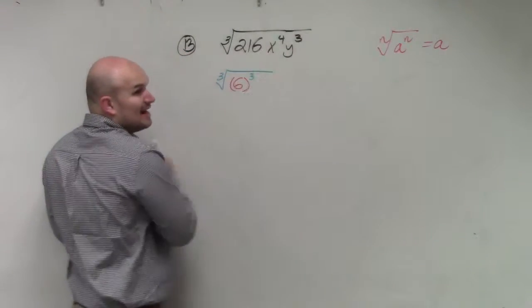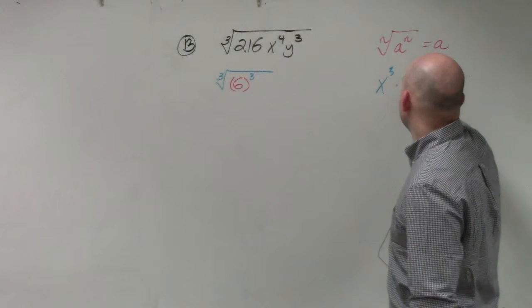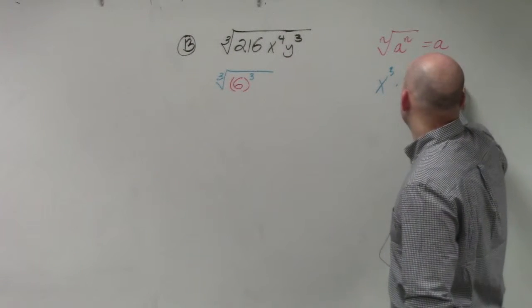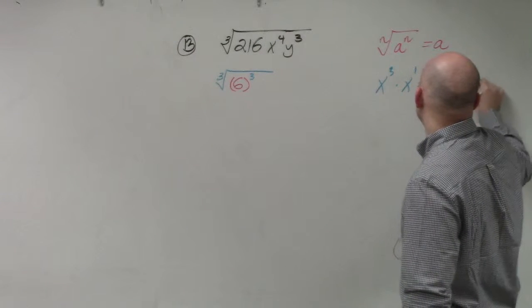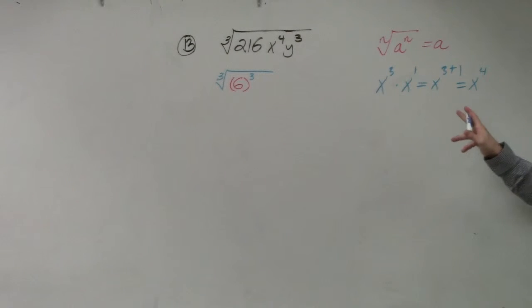Then I can rewrite x to the fourth. Remember the rules of exponents? x cubed times x to the first is equal to x to the 3 plus 1, which equals x to the fourth. Would everybody agree with that math?